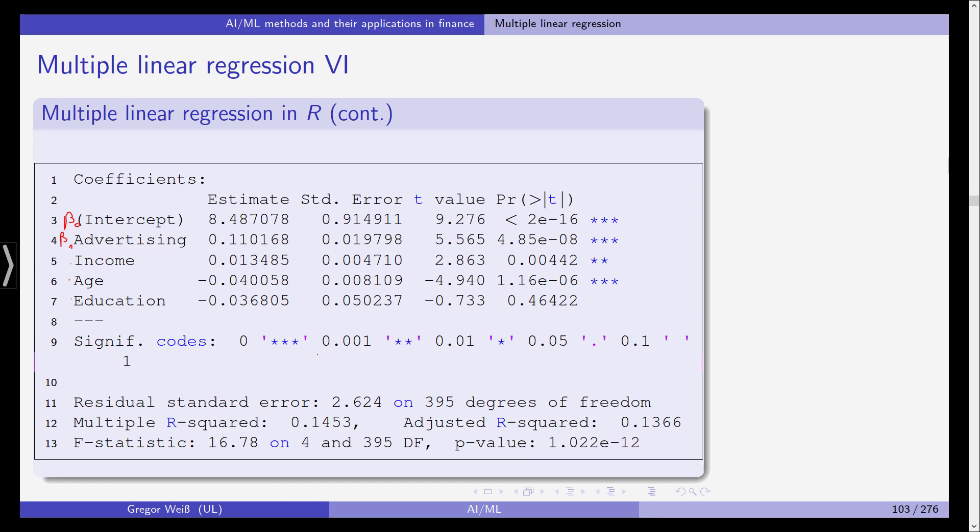Actually, this is different in R. As you can see here, 3 stars actually means significant at 0.1%. So 2 stars is 1%, 1 star is 5%. So actually, in a research paper, you would probably have to add another star, for example, in this case. We can see advertising is highly statistically significant, as is income and as is age. Education is not significantly different from 0. So it seems that our predictor education has no power to explain the car sales in this data sample. You can see the number of observations. You can see the multiple R squared is close to 15%, we have an adjusted R squared of 14%, and we get an F statistic and a p-value for the whole model.